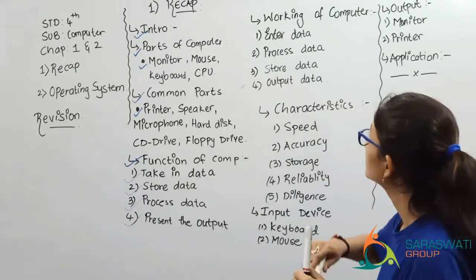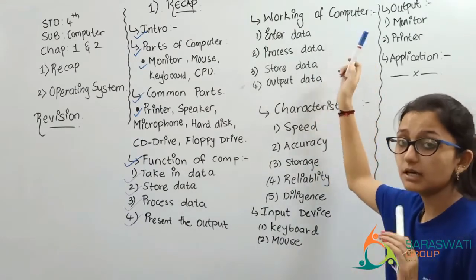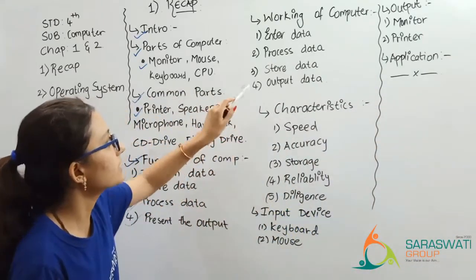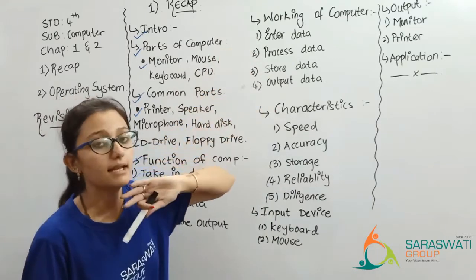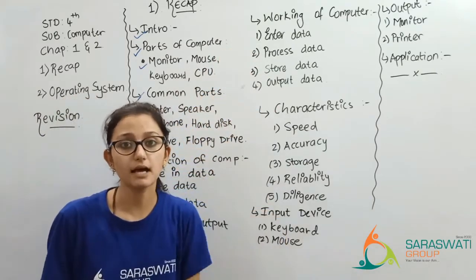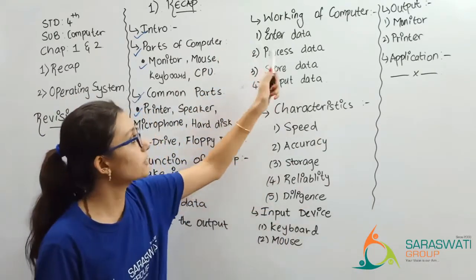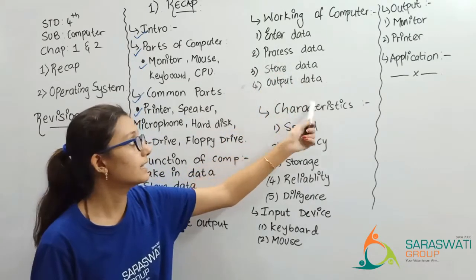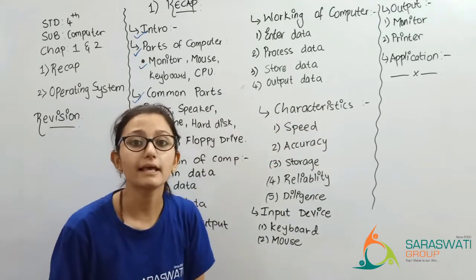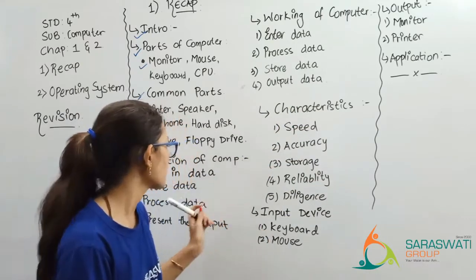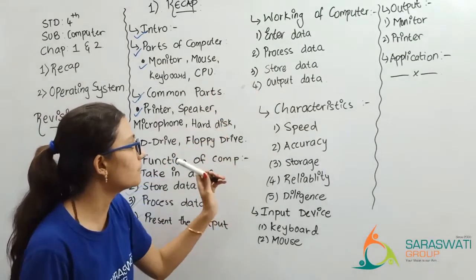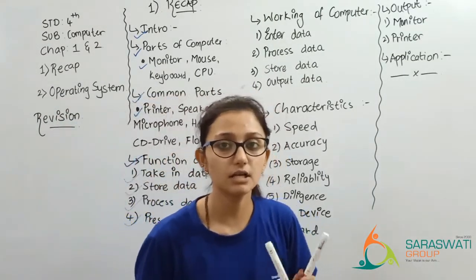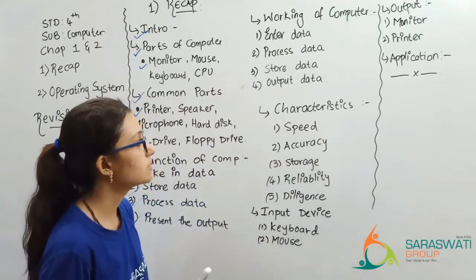Next thing is the working of the computer. How does the computer work? The working of the computer is: enter data — data is entered into the computer; then it is processed; then the data is stored; and then it gives the output. So the function and working of the computer are somewhat similar.